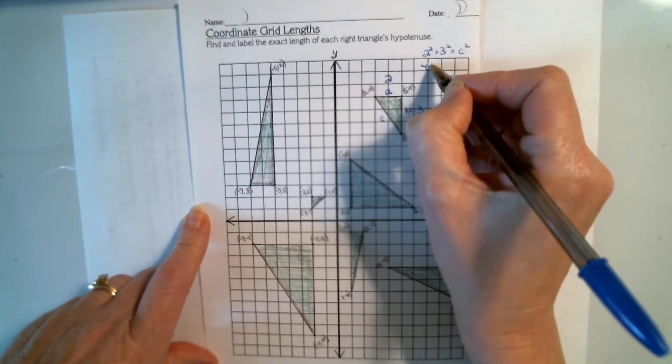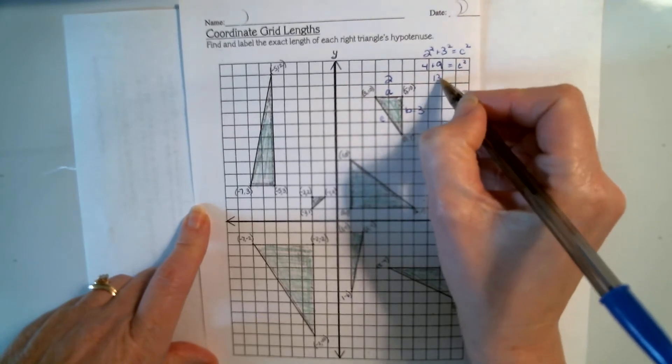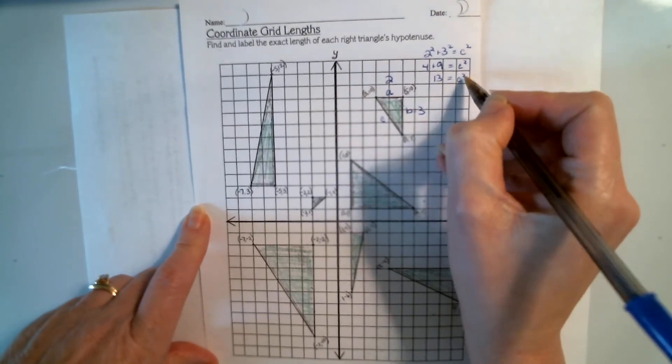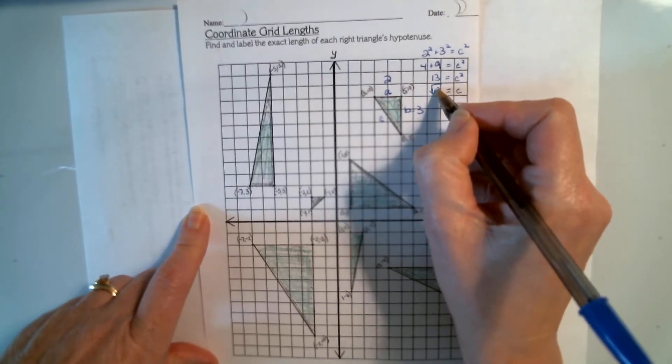And 4 plus 9 would equal c squared. 13 would equal c squared. And so c would be the square root of 13.